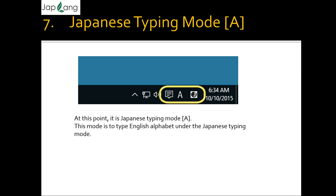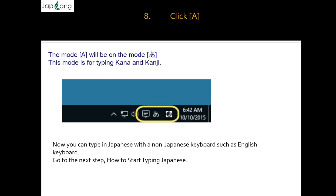Now in Japanese typing mode, you will see mode 'A'. This mode is to type English alphabet under the Japanese typing mode, so you can type in Romaji and get characters in hiragana, katakana, or kanji. Click 'A' and the mode will switch to hiragana 'A'. This mode is for typing kana and kanji — both hiragana, katakana, and kanji. Now you can type in Japanese with a non-Japanese keyboard such as an English keyboard.